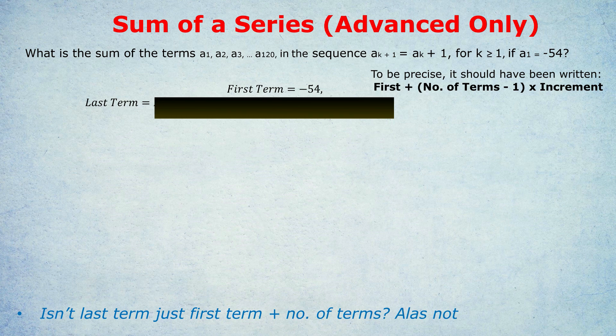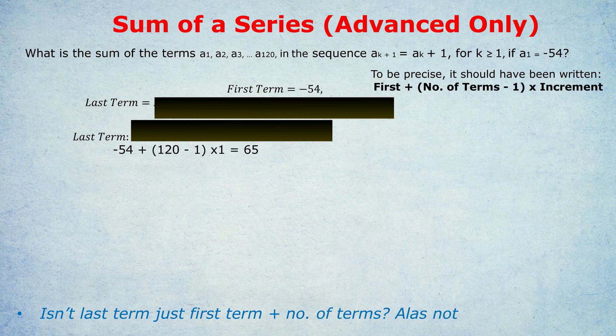From now on, though, we're going to be using the formula that you're familiar with. The middle term is the first term plus the last term divide by 2. Using our formula, the last term is minus 54, that's the first term, plus 120, take away one, which is 65. Middle term, minus 54, plus 65, divided by 2, gives us 5.5. So the middle term, going from minus 54 up to 65, is actually 5.5, following the formula.